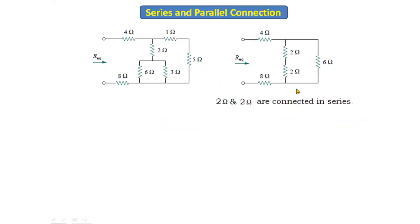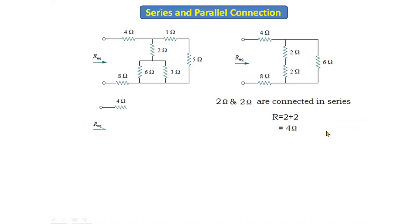The 2 ohm and 2 ohm resistors are connected in series. Using the series formula R = R1 + R2, we get 2 + 2 = 4 ohms. If we rearrange the circuit, the 2 ohm and 2 ohm are replaced with 4 ohms, and the remaining resistors stay as they are.